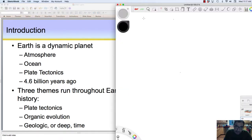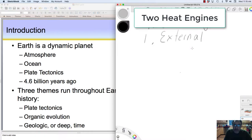One of the things I want to point out is that the dynamic planet is driven by really two heat engines. The external heat engine is driven by solar radiation, the Sun.